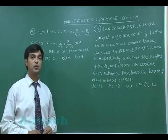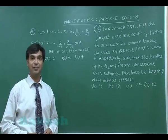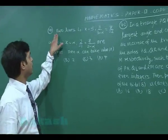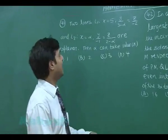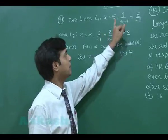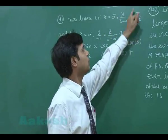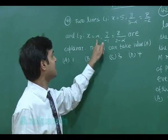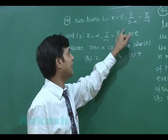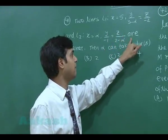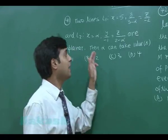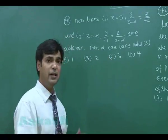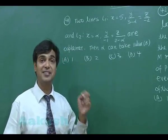Hello students, so now let's turn to solve the second paper of JEE Advanced 2013 with code 8. Question number 41: Two lines L1: x = 5, y/(3-α) = z/(-2) and L2: x = α, y/(-1) = z/(2-α) are coplanar. Then α can take values as given in four options. This is the first section containing more than one correct answer.